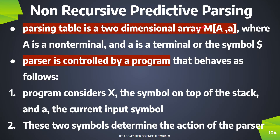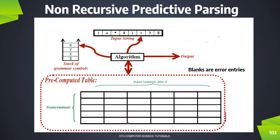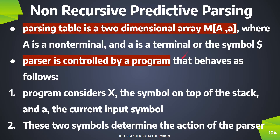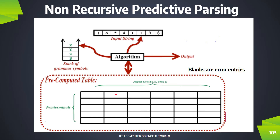The Parsing Table is a two-dimensional array M[A, a]. Capital M is the Parsing Table. Capital A is the row — it is a non-terminal. Small a is the column — it is a terminal symbol, including $. The terminal symbols correspond to a row and we use the value for processing.